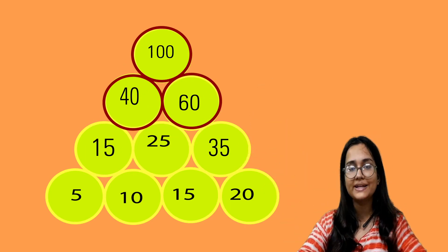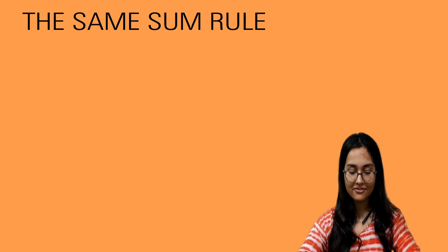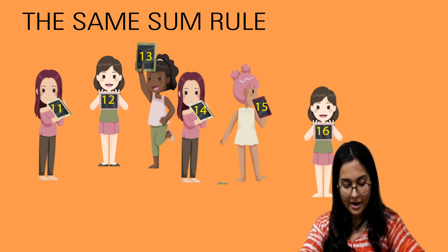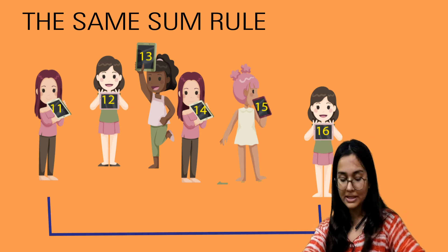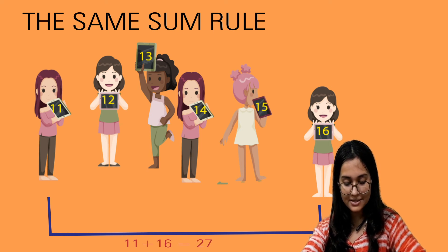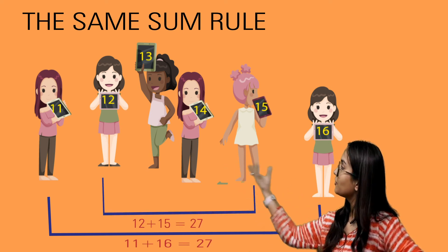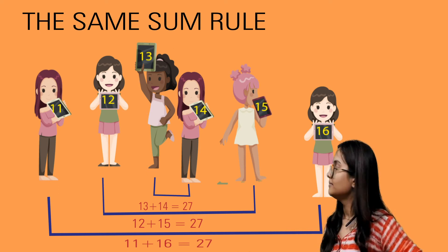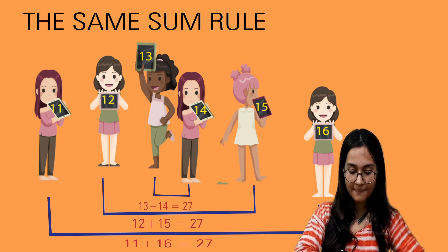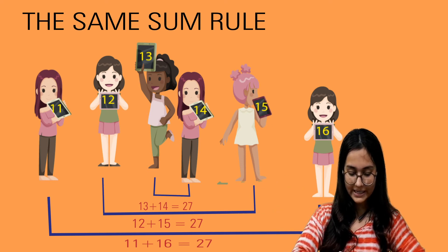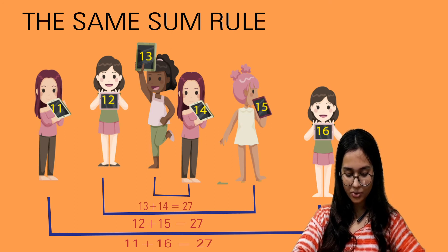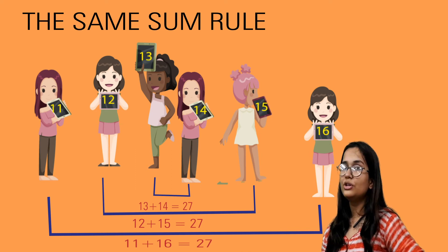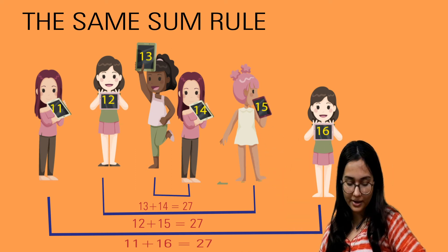Then we have the same sum rule. Some friends are playing with number cards and see how they add — first from the left and then from the right. 11 plus 16 is 27, 12 plus 15 is also 27, and 14 plus 13 is also 27. You write any number and the three numbers after that, make a pattern using the rule, and see if you get the same sum.